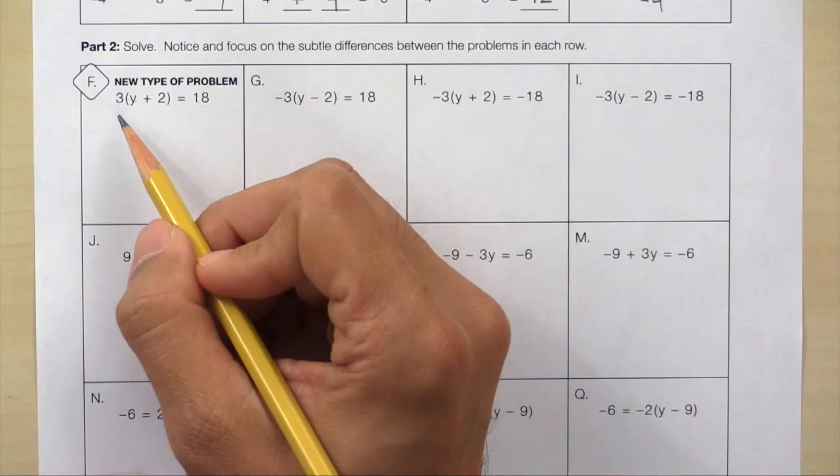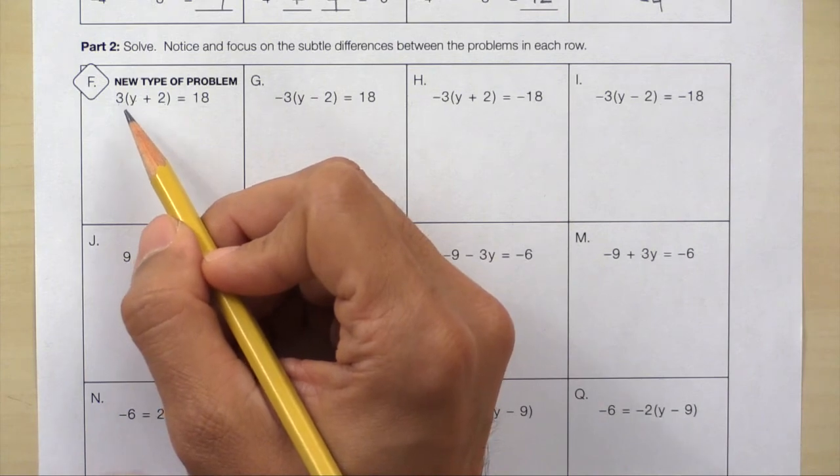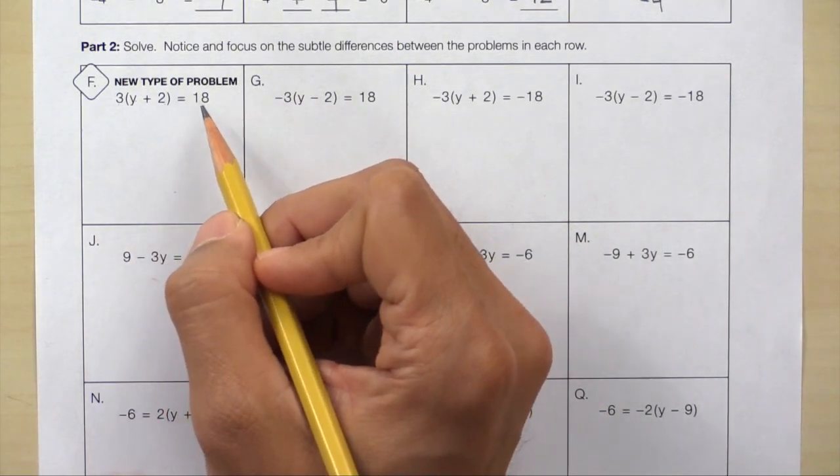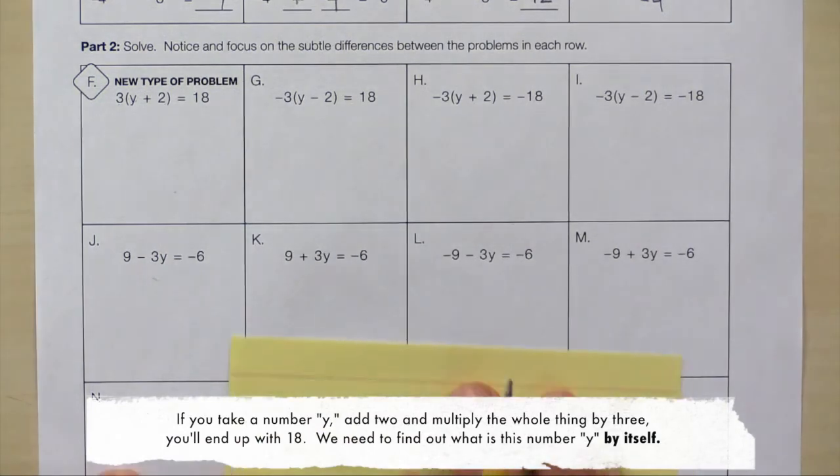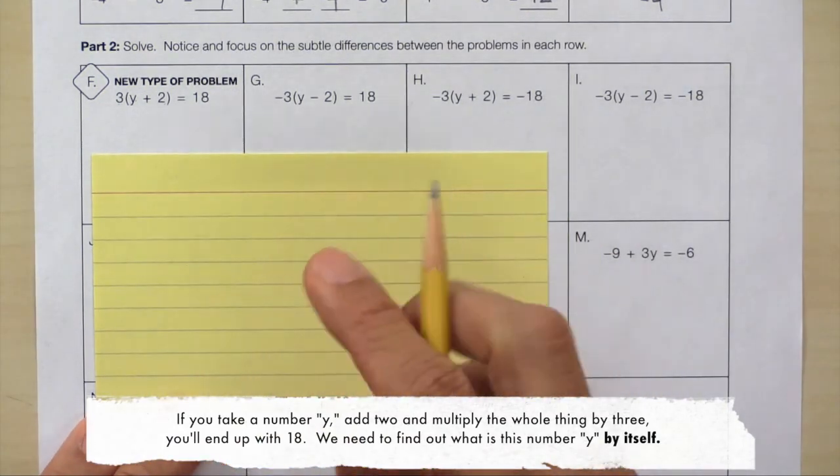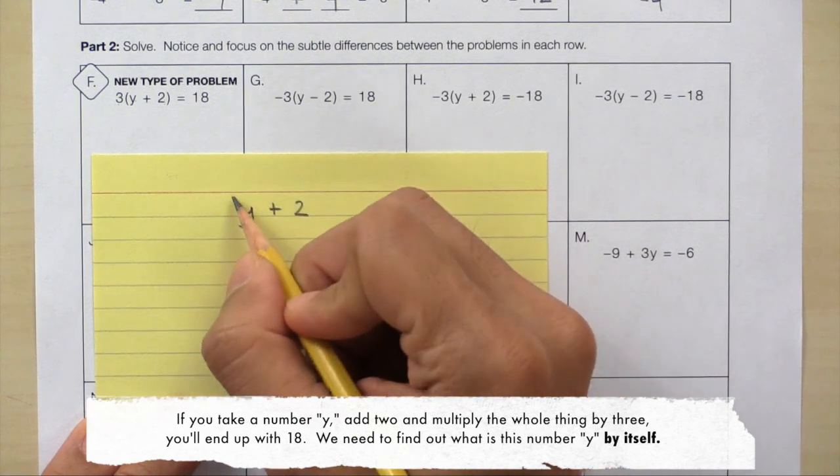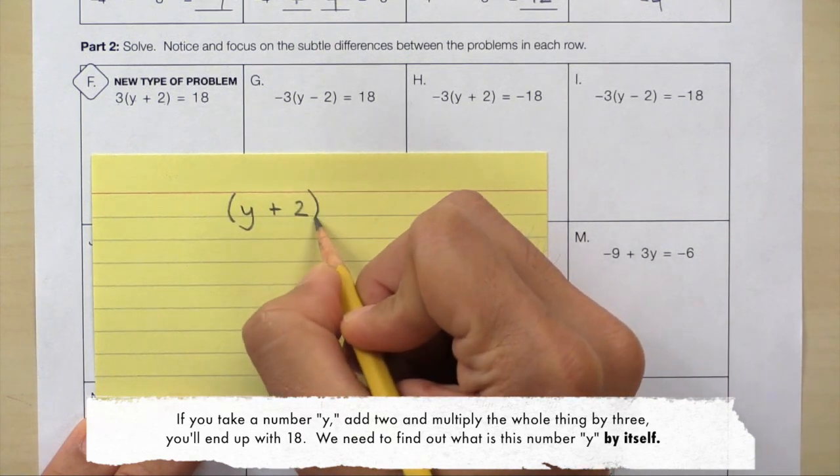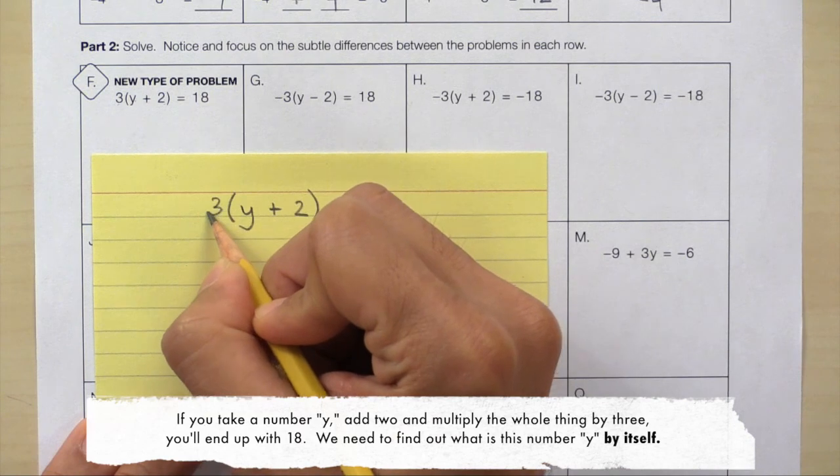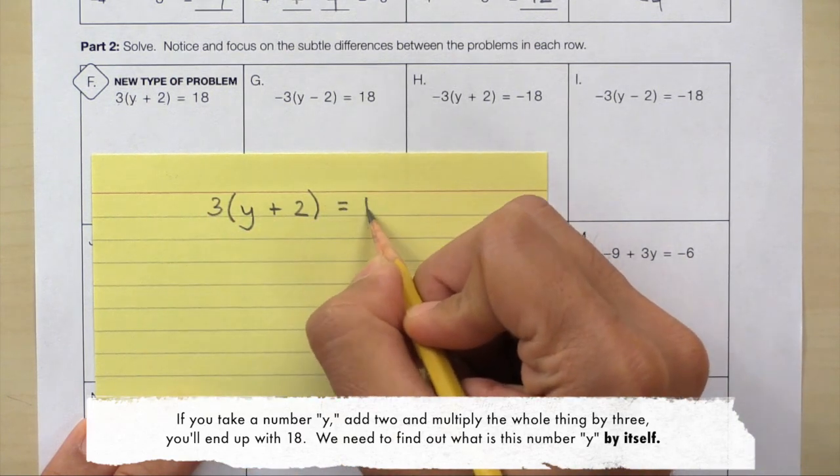Here's box F, and notice that there's a new type of problem. Here we have 3y plus 2 equals 18. What this means is if you take a number y, add 2, and then multiply this whole thing by 3, you'll end up with 18.